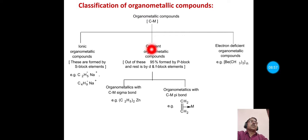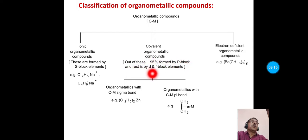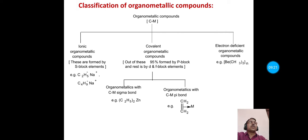The second type is covalent organometallic compounds. The majority of covalent organometallic compounds are formed by p-block elements, and the rest are formed by d- and f-block elements. These are further classified into two types: organometallic compounds with a carbon-metal sigma bond, and organometallic compounds with a carbon-metal pi bond. Those with a carbon-metal sigma bond are formed by a two-centre, two-electron carbon-metal bond, with diethyl zinc as an example.